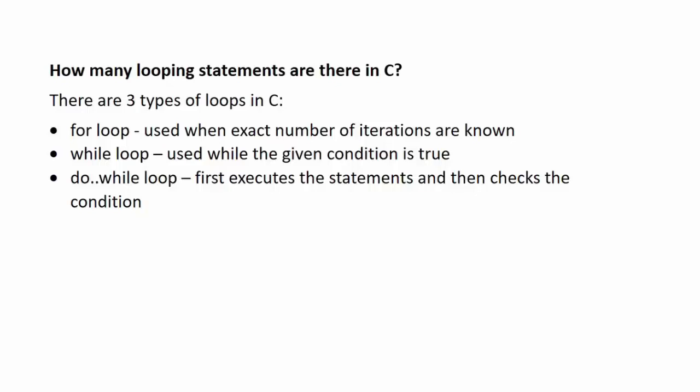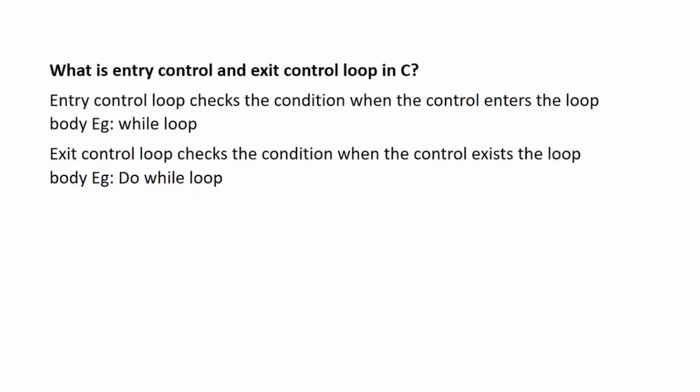Next is the while loop. It is used while the given condition is true — this loop iterates while the condition evaluates to true. As soon as the condition evaluates to false, this loop stops its execution. The third is the do-while loop. It first executes the statements and then checks the condition. These are the three types of loops in C.